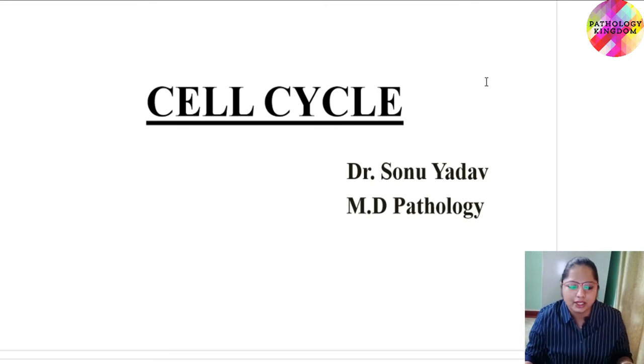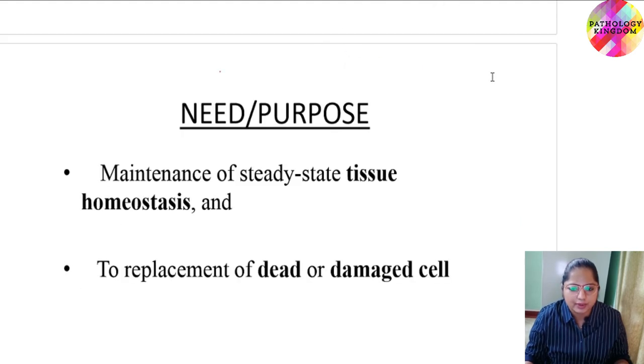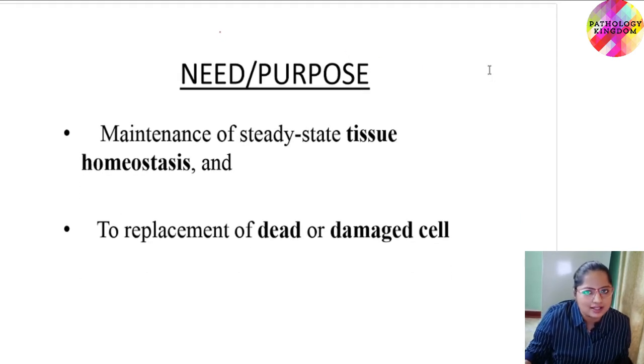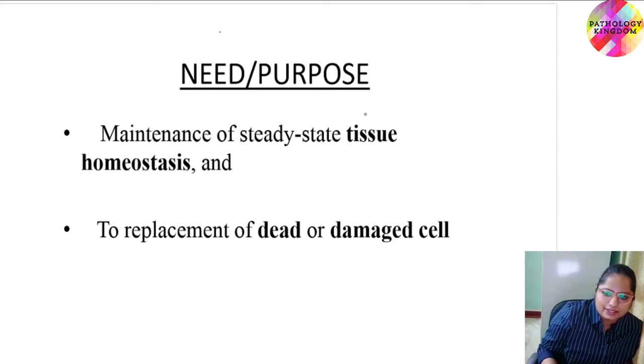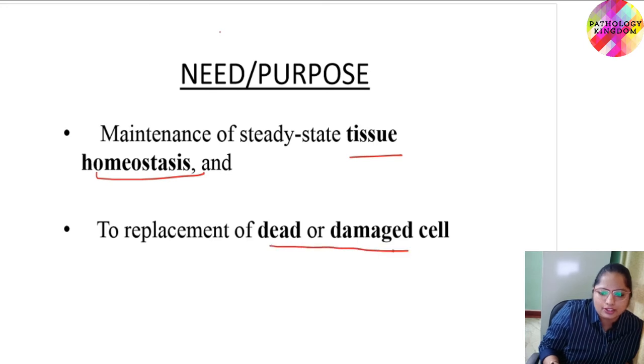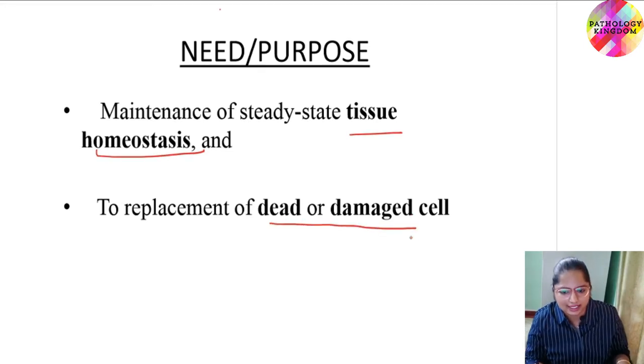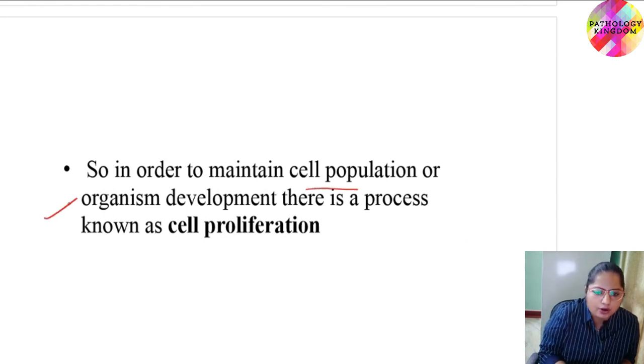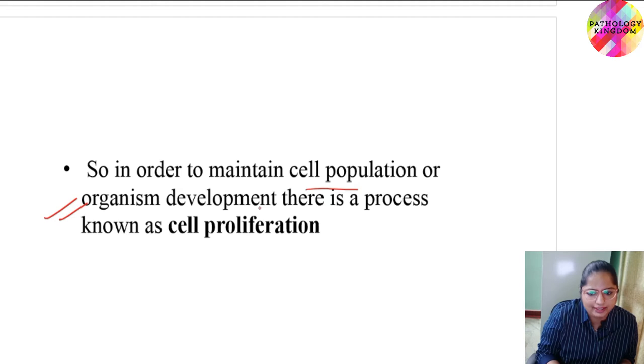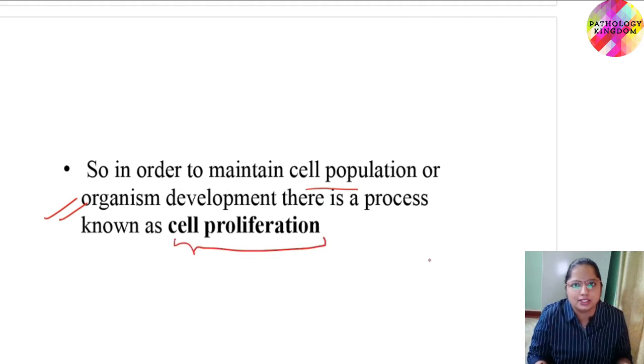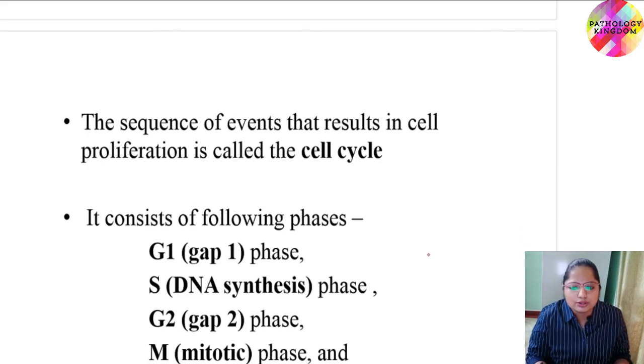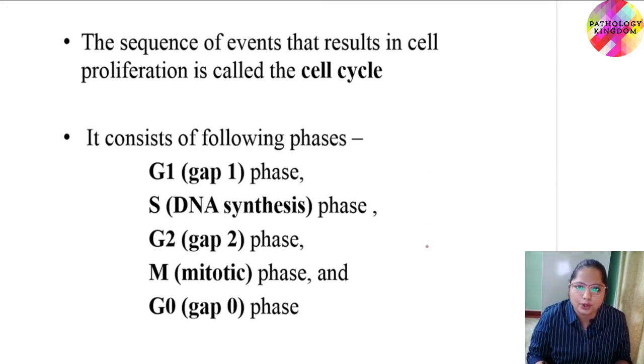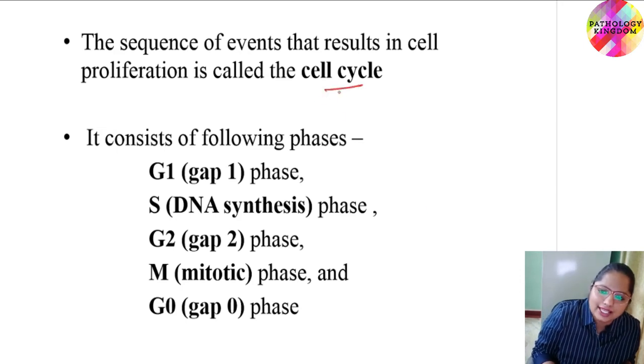Today's lecture is on cell cycle. Now first of all coming on to the need or purpose. The basic need is to maintain a steady state, that is tissue homeostasis, to replace dead or damaged cells. In order to maintain cell population or organism development, there is a process known as cell proliferation, and the sequence of events that result in cell proliferation is called cell cycle.